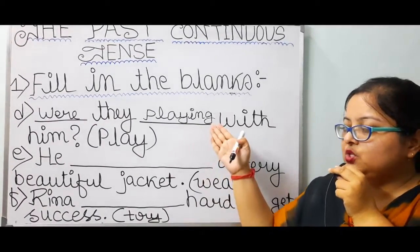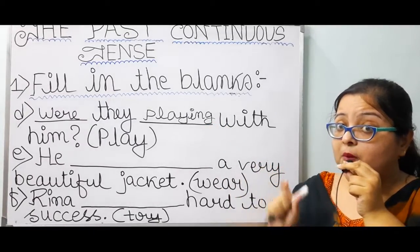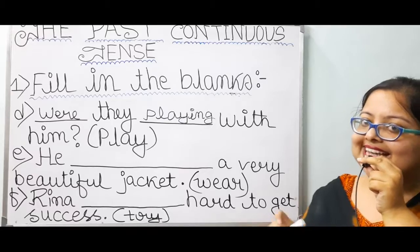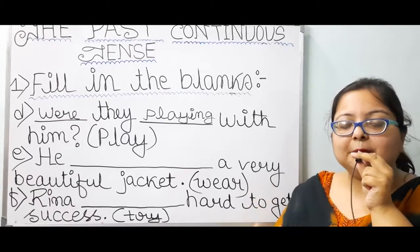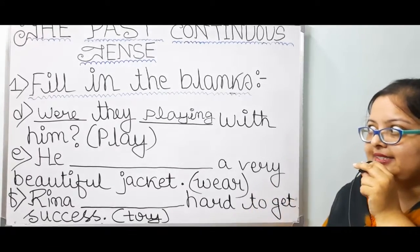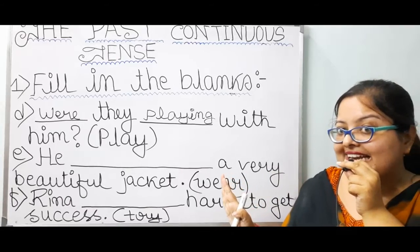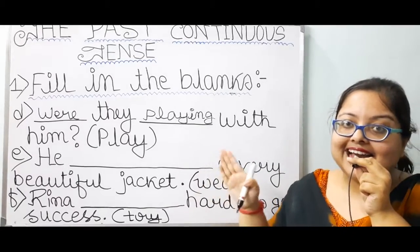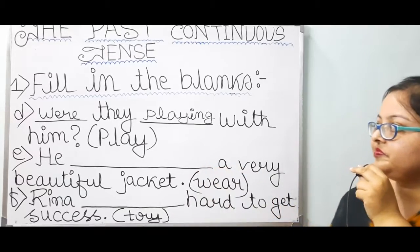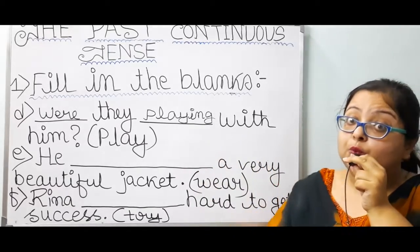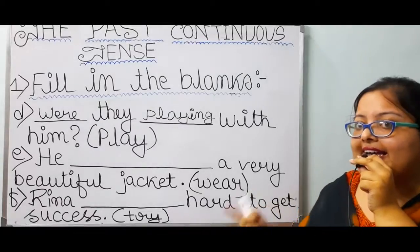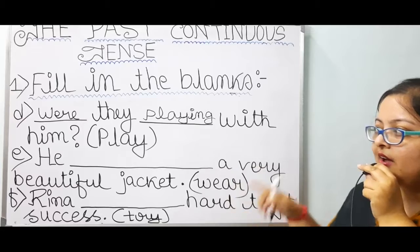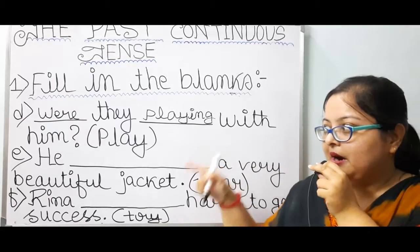The first form of the verb is needed. Otherwise the second and third forms would be 'played', but we don't deal with second and third forms here — just the first form, which is 'play', and we add -ing: playing. Were they playing with him?